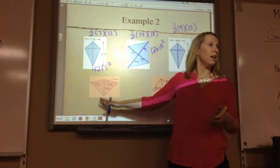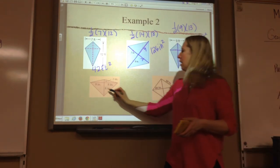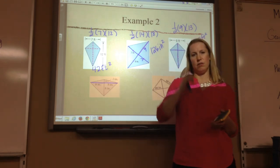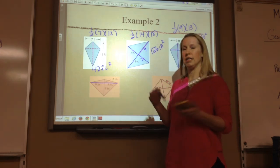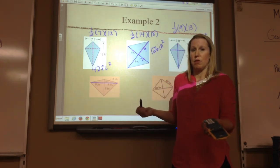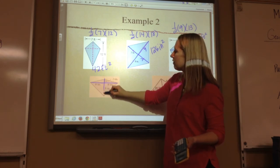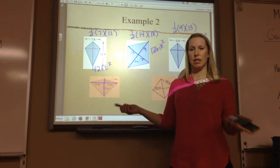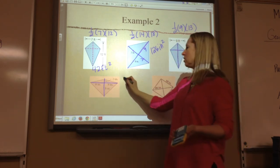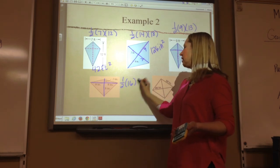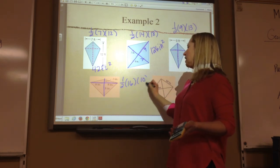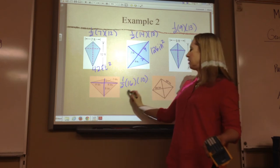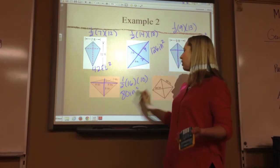This is another kite. What is the length of that entire diagonal? Eight plus eight is sixteen, so that would be sixteen. What's the length of this entire diagonal? Eight plus two is ten, so that would be ten. So it's one-half sixteen times ten — sixteen times ten is a hundred and sixty, divided by two — eighty inches squared.